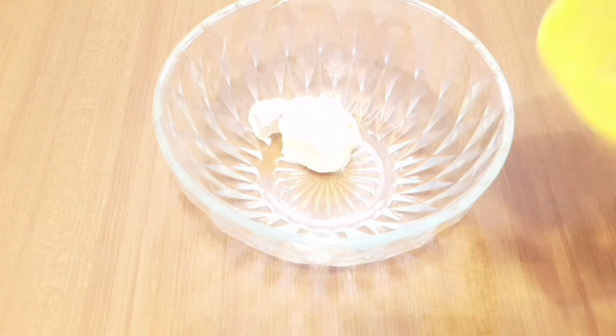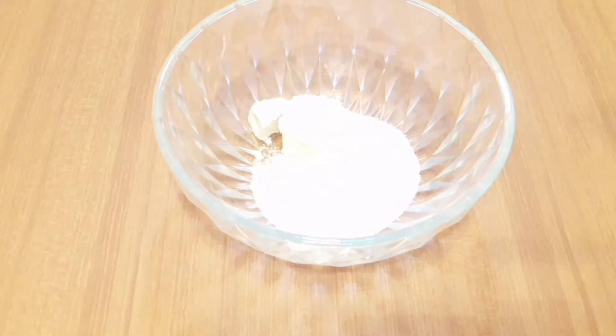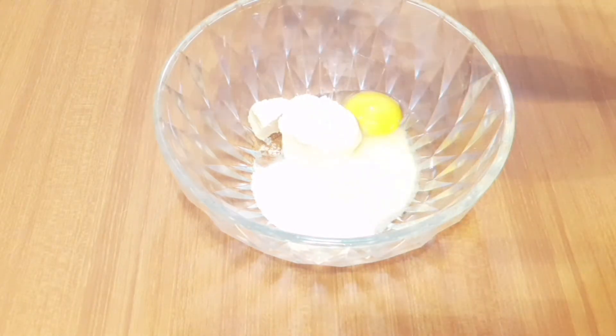First you need a bowl. Then I'll be adding the butter into it. I'm going to be listing the ingredients in the description box with the measurements. Then I'll be adding two full spoons of sugar. Then I'll be breaking the eggs into it.